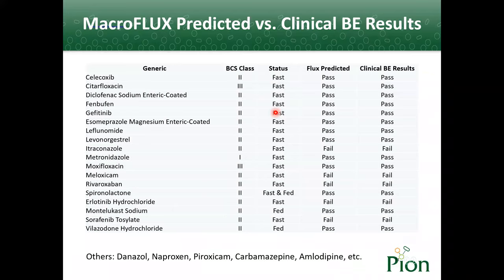There are more flux predicted results comparing against bioequivalent results. Most of the studies were done with the collaboration between the research institutes operated by the Chinese FDA and the pharma companies in China. Most of these compounds are class 2 compounds. Some of them are class 3 or class 1 compounds.